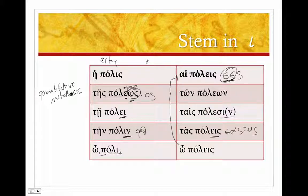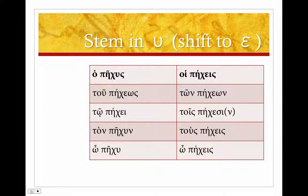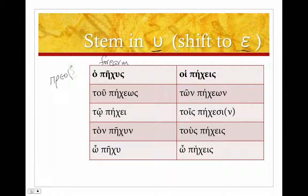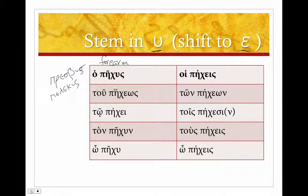Those are nouns whose stem is in iota — if you see a nominative in '-is', it's going to follow this pattern. Then we have stems that end in upsilon but shift to epsilon. For example, 'pechus' (forearm) — 'pechaos'. You'll see other nouns like this: 'presbus' (old man/elder), or 'pelekus' (axe). Again, you'll notice them because the genitive is in '-eos'.